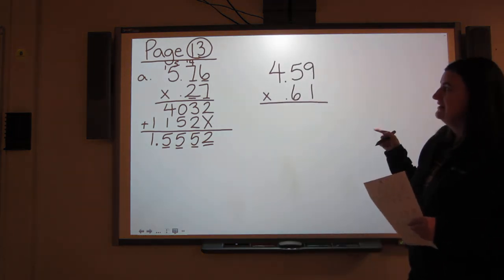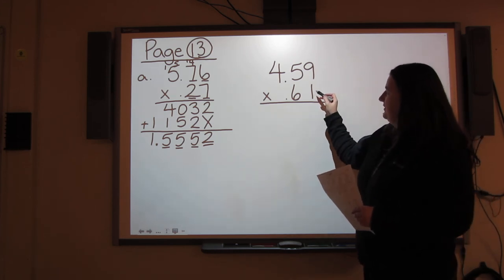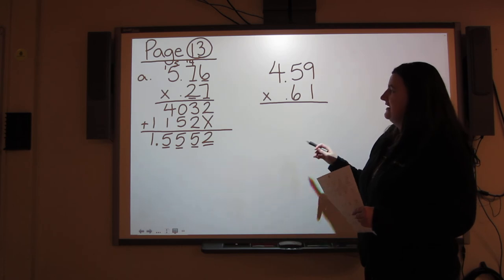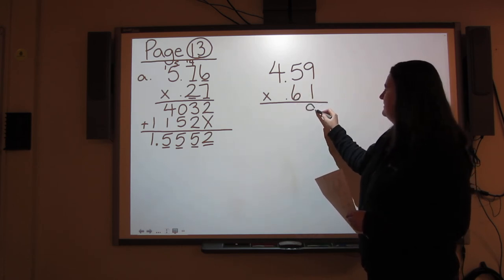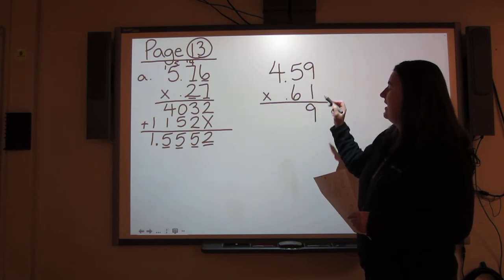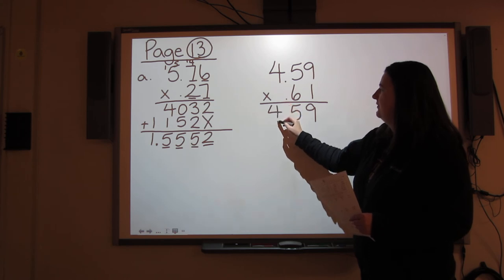Let's practice again with the next question. I start with the 1. I ignore the decimals for right now. 1 times 9 is 9. 1 times 5 is 5. 1 times 4 is 4.